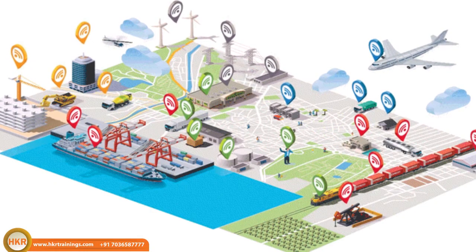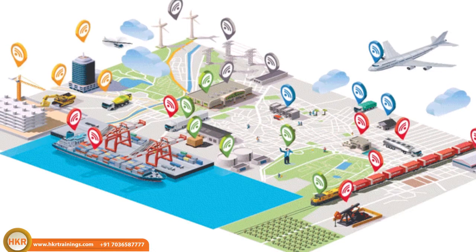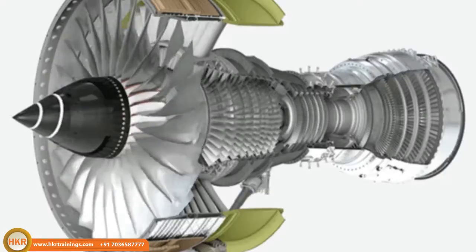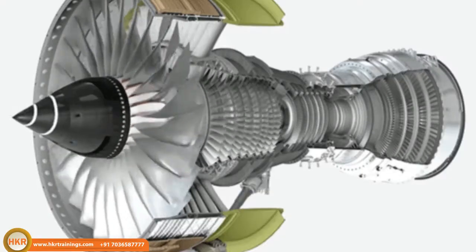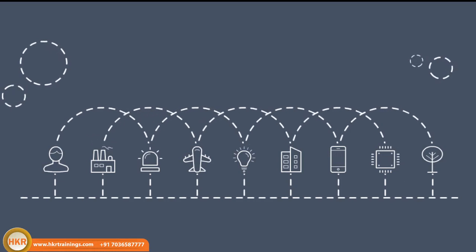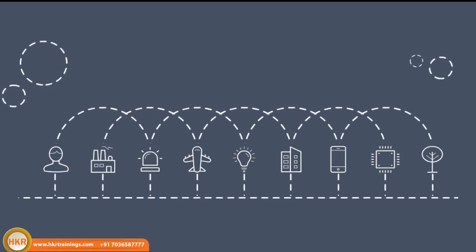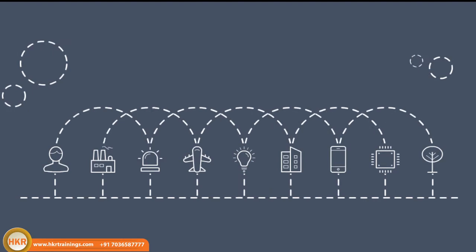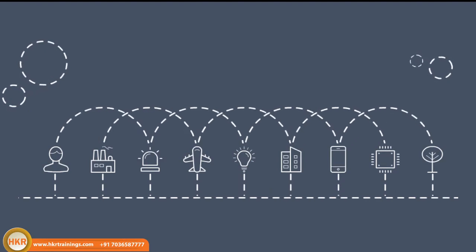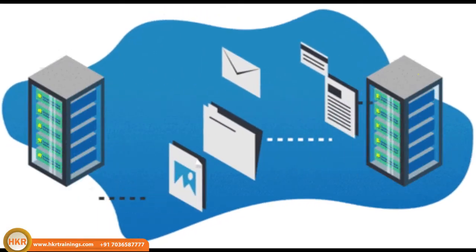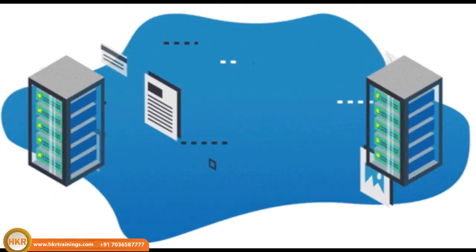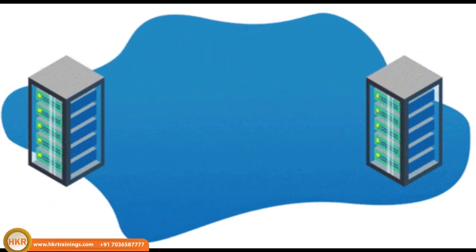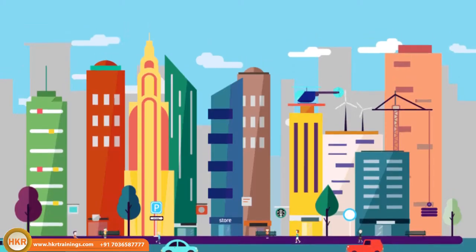Even larger devices can be used as IOT. For example, larger objects like a jet engine can have thousands of smaller IOT devices combined together. This is very efficient. The data can be used to transmit and receive. Different workflows can be used across many different locations.